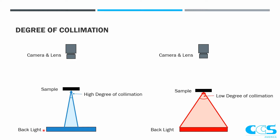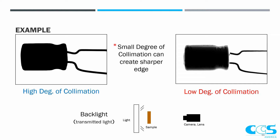Versus if I had a backlight that is more collimated, where the light is shining more straight up, I'm not going to have the ability to get as wide of an angle on this sample point, and I'm going to have a much higher degree of collimation. A high degree of collimation gives you very sharp edges, because there's not a lot of light coming from other angles to hit the top and wrap around to the camera. Versus a low degree of collimation has that wide angle, so you're getting a lot more light wrapping around.